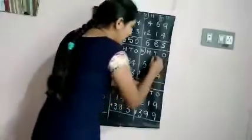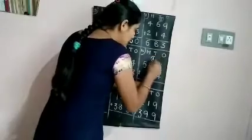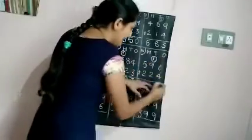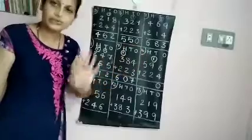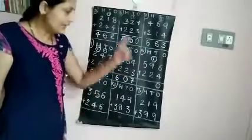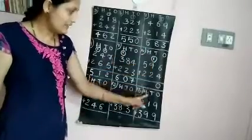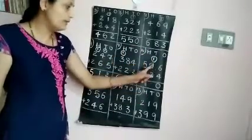So, 1 carry to the tens column, and write 0 in the ones column. 10. Got it? Now let us add the tens column.